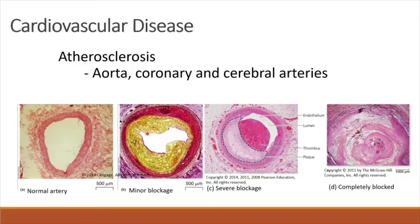The inner lining is damaged, leading to inflammation, which also causes the lumen to become narrow. The artery is blocked and when filled with blood, it loses its ability to stretch. Figure C shows severe blockage of the artery due to formation of plaque and thrombus. Plaque is formed from various substances including cholesterol and calcium, while thrombus is a blood clot. Figure D shows that the lumen of the artery is completely blocked by the thrombus.